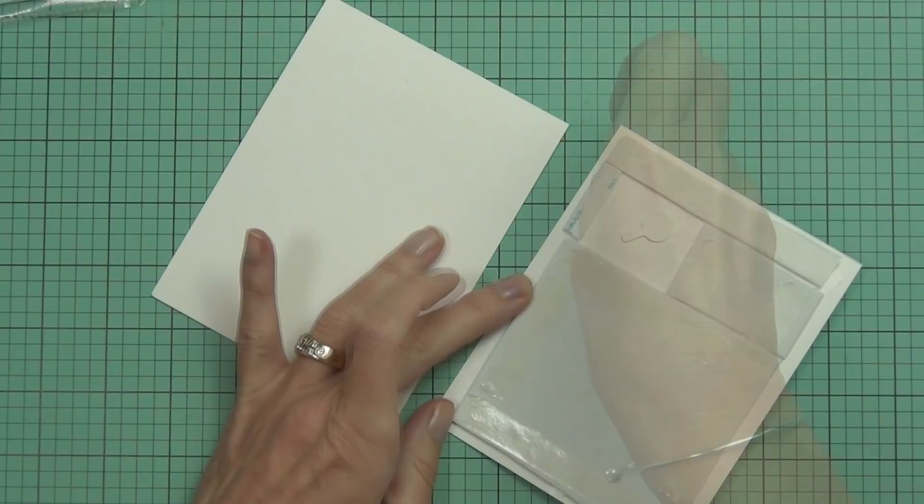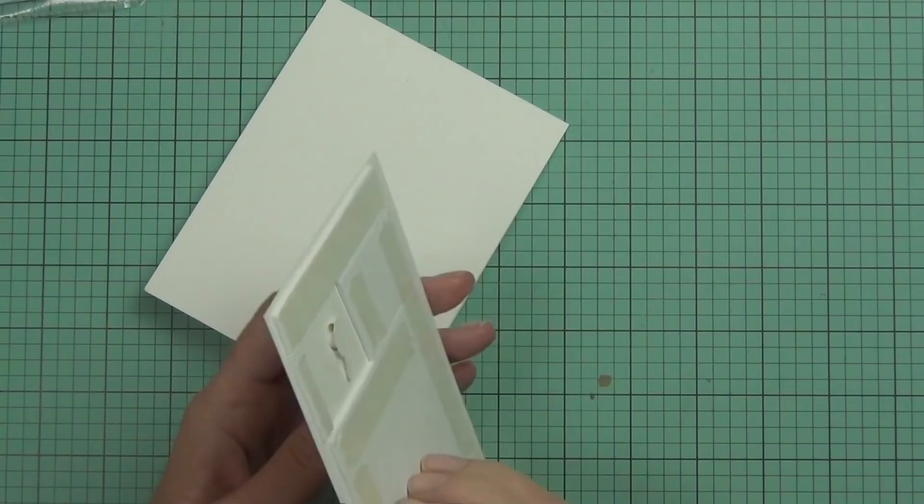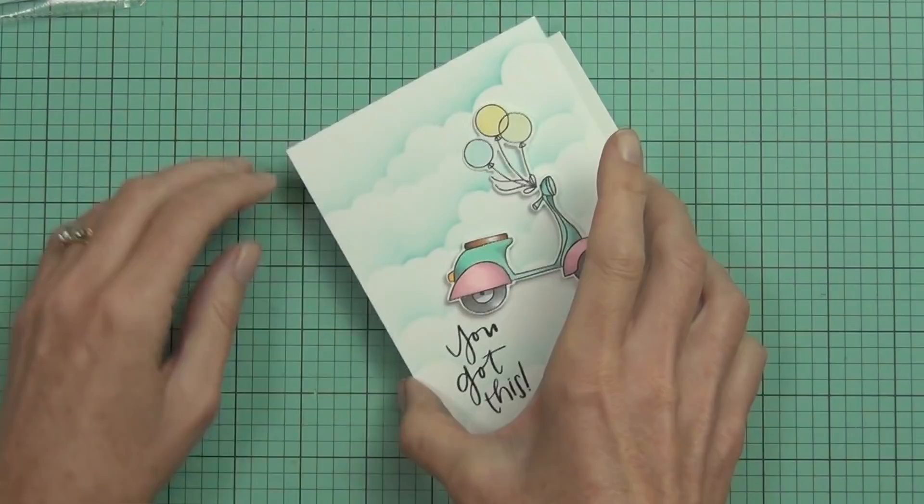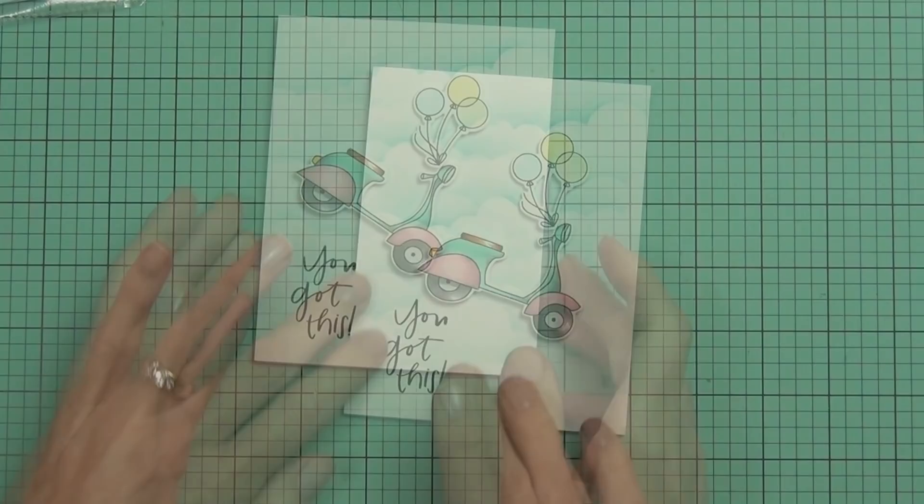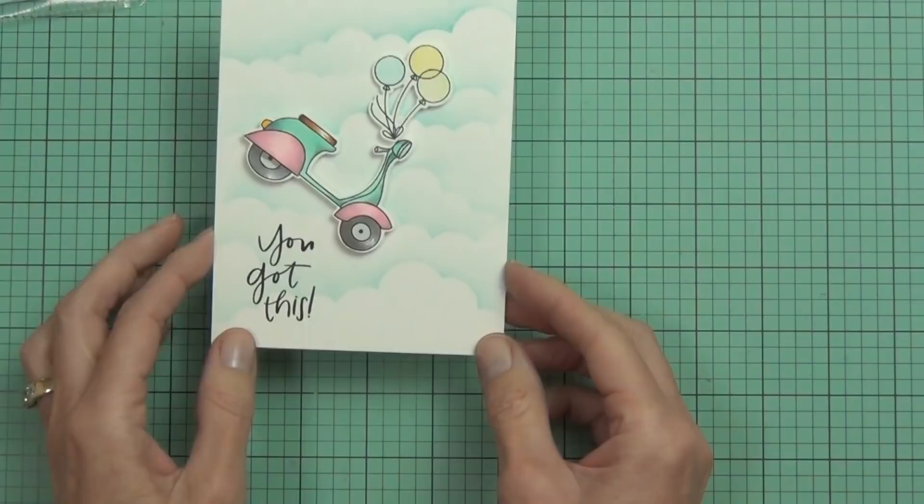I've added some fun foam to the back of my panel, making sure to leave a nice big well. You can see where the swingy bit on the back is, so I've left lots of room around there so that it can swing without hitting the foam behind it.